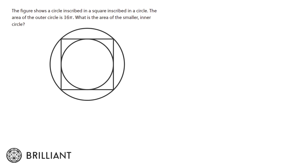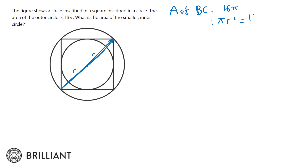Step one is drawing radiuses; step two is looking for right angle triangles. The first radius I notice goes across the bigger circle — and if I go all the way across, this is the diameter, so each piece is the radius of the big circle. We have the area of the big circle is 16 Pi, so Pi r squared equals 16 Pi, meaning r squared is 16 and r equals 4. The big circle has a radius of 4.